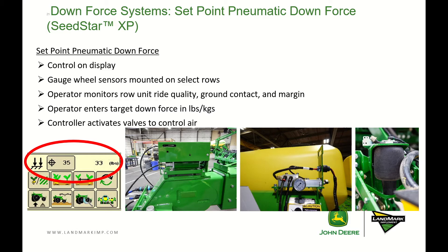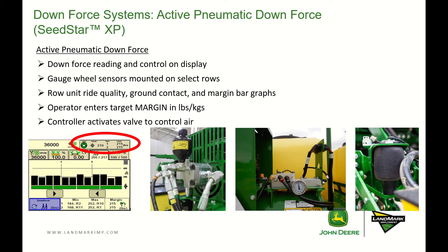If integrated, or in the SeedStar 2 system, the operator can control the target downforce on the screen. Then we have set point pneumatic downforce, where you control it on the display, monitor row unit ride and quality — found in SeedStar XP. You enter the target downforce and the controller manages the valves to control the air. Then we have the active pneumatic downforce system where the display reads in margin, not set point, with gauge wheel sensors on a certain number of rows that provide feedback on soil load, and the controller automatically activates valves to fill or dump air to stay at the operator-set margin value.